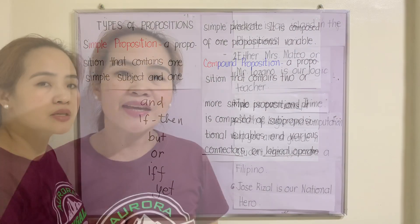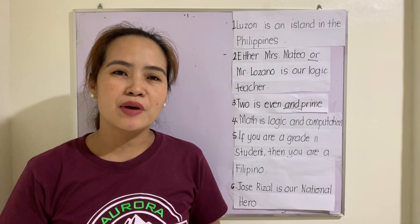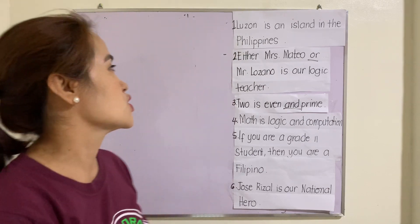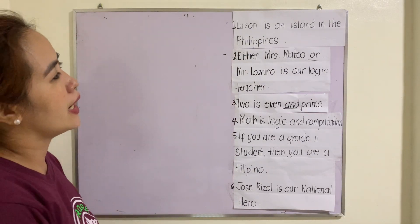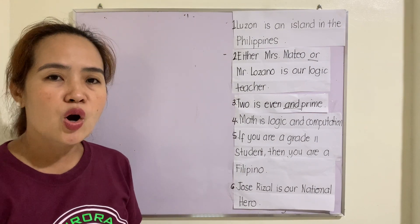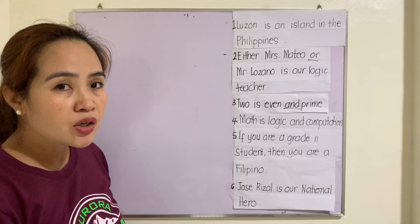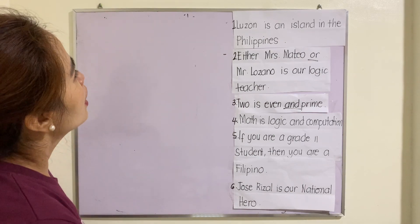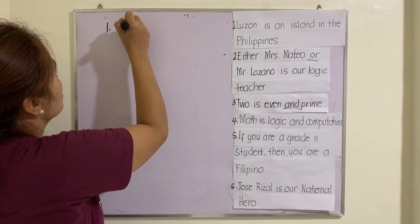Let us now determine whether each given statement is a simple or compound proposition. Number one: 'Luzon is an island in the Philippines.' As you notice, there is no logical connector or logical operator, therefore this one is a simple proposition.